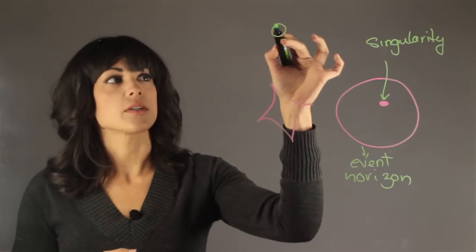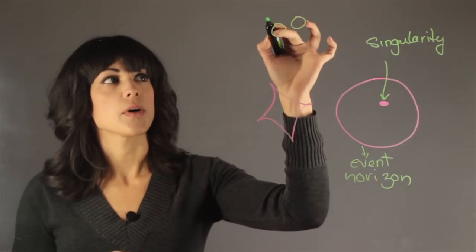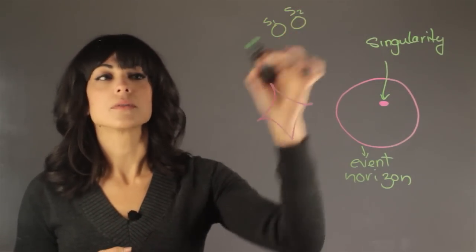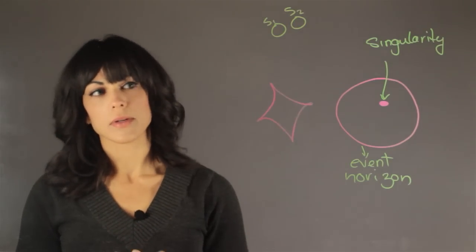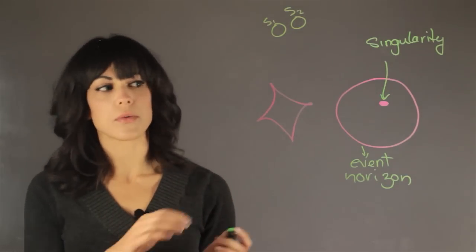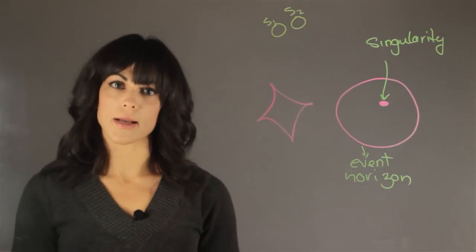So sometimes stars come in pairs. So you have a star one and star two. And then one dies and becomes a black hole. And you end up in this situation where you have a really nearby star next to the black hole.